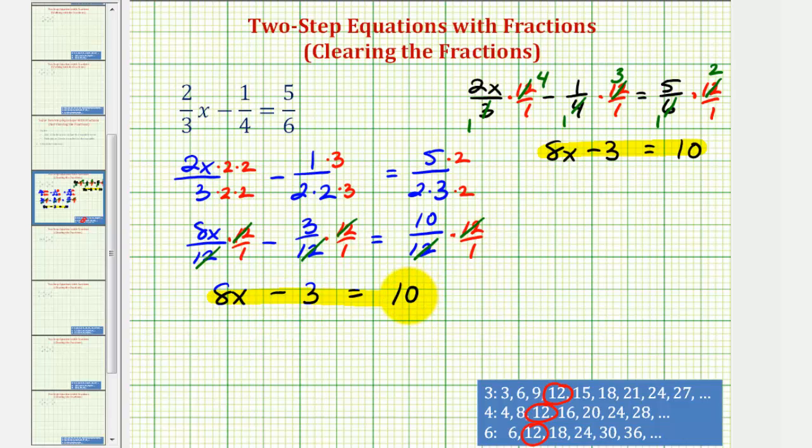Let's go ahead and solve the resulting equation here. So for the next step, we'll undo the subtraction by adding three to both sides. So now we have eight x equals thirteen. Last step, divide both sides by eight.